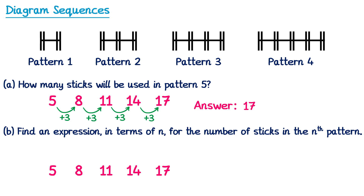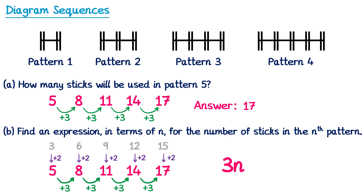To find the nth term we first need to work out the difference between each of the terms. We know we add 3 to get to the next term. If we add 3 the answer must involve 3n. The 3 times table is 3, 6, 9, 12, 15. We then work out how to get from 3n to our sequence. If we look at the first term, 3, to get that to 5 we must add 2. And this works for all of the other terms as well, so the answer is 3n plus 2. Notice to answer this question we didn't really need the diagrams anymore — we turned the diagrams into numbers and then just found the nth term.